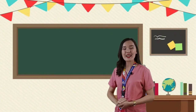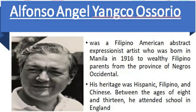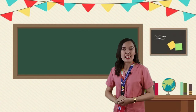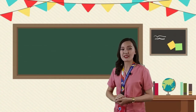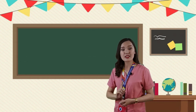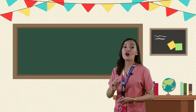Next we have Alfonso Angel Bianco Ossorio. He was a Filipino-American abstract expressionist artist who was born in Manila in 1916, to wealthy Filipino parents from the province of Negros Occidental. His heritage was Hispanic, Filipino, and Chinese. Between the ages of 8 and 13, he attended school in England. His artwork is The Angry Christ in Congregation — a mural commissioned by the Parish of St. Joseph in Victoria City, Negros Occidental, Philippines, for the reconstruction of the church.